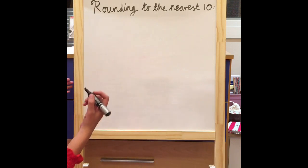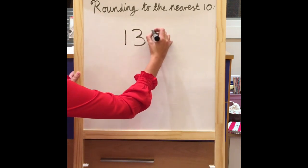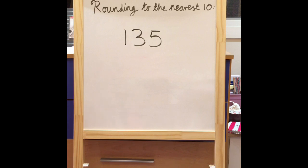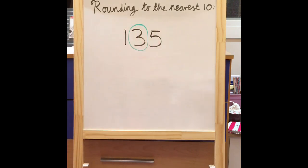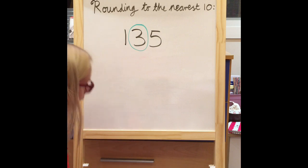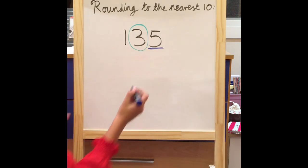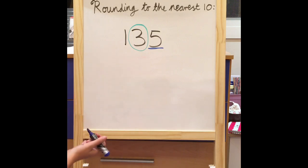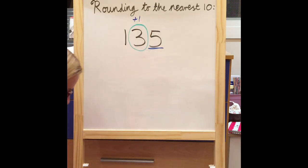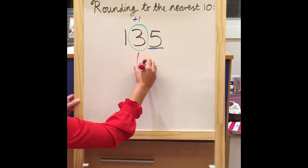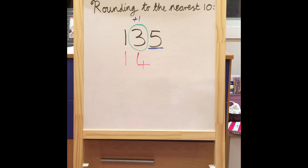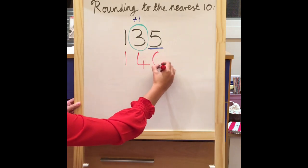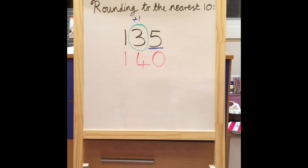Let's take a look at another number. If we had 135 and I'm rounding to the nearest ten, I need to circle my tens column. Using the rhyme — circle your number, look next door — I need to look next door to my ones column. Five or greater add one more: it's a five, so I must add one to my tens column. So now my tens column has turned into a four. Numbers on the left stay the same, so my one will stay the same. Numbers on the right, zero is your name. So 135 rounded to the nearest ten is 140.